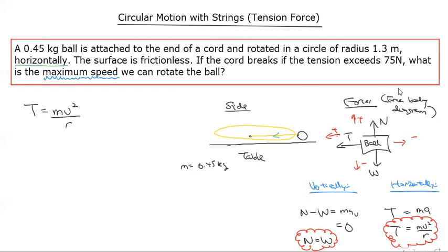The question says you have a maximum tension - you can't go over 75. So let tension equal the maximum tension, which is 75. Let your mass equal 0.45 and your radius equals 1.3.